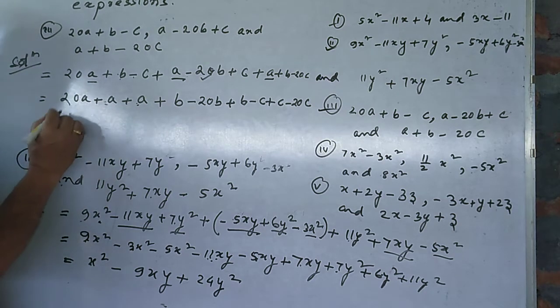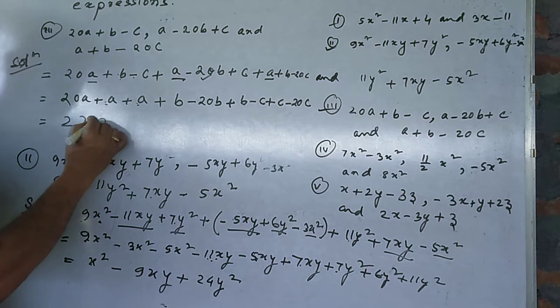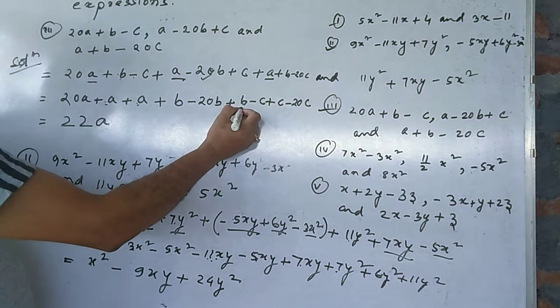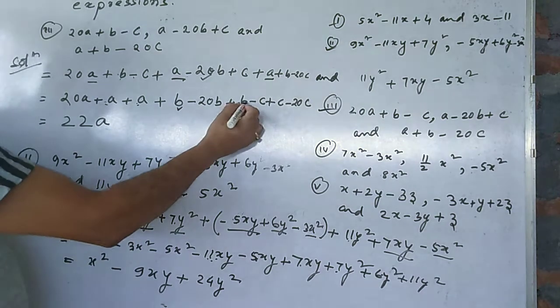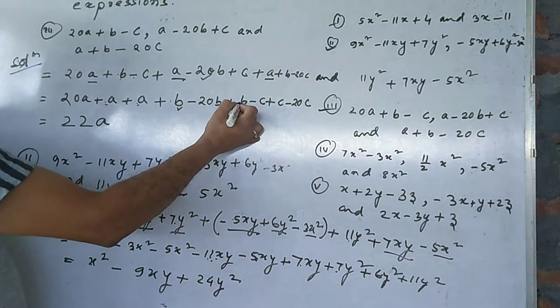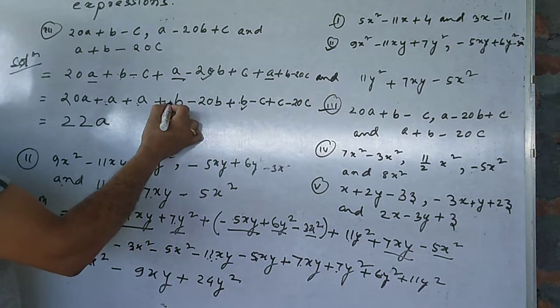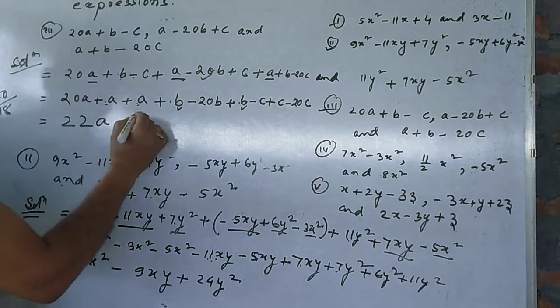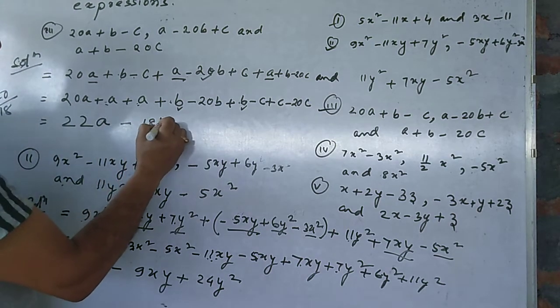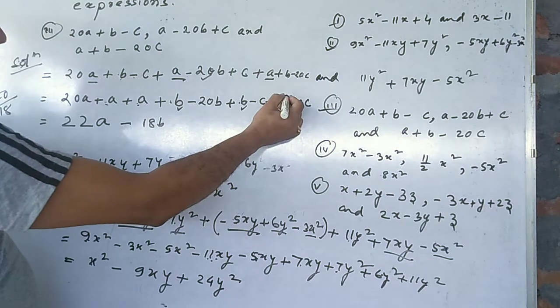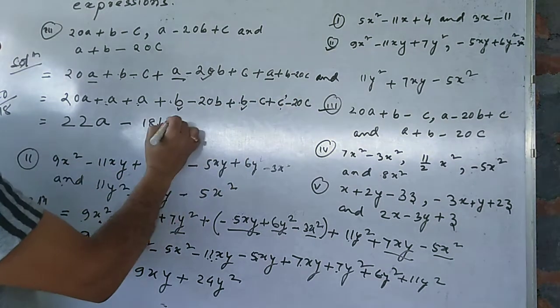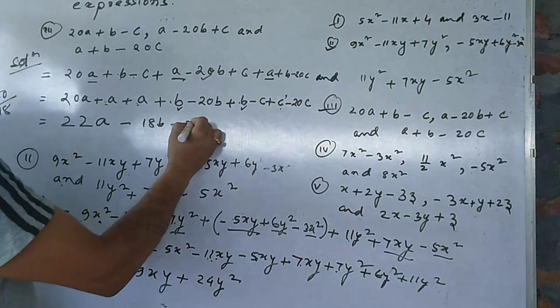Here coefficient is 20, here one, here one, then one, one, two, and 20 is 22a. B terms: here one, here one, one, two, plus two and minus twenty is minus 18b. Plus minus cancel, so minus 20c.